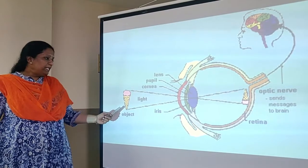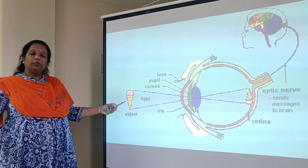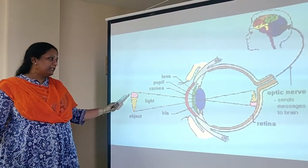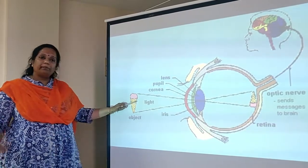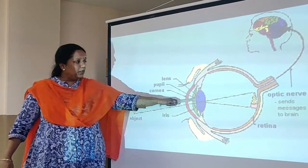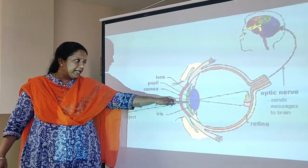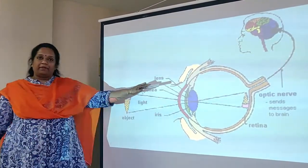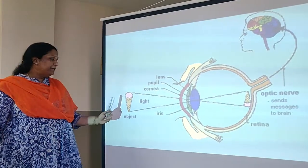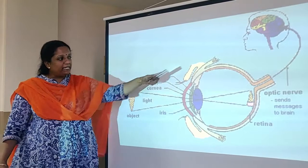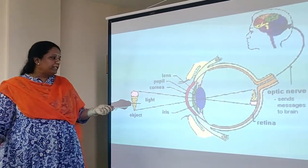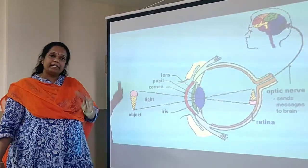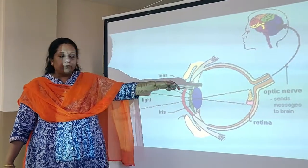In this particular diagram, we see that when we look at an object, the light rays that come from the object we are viewing fall on the convex lens which is inside our eye, and the image of the object is formed on the retina. The image formed on the retina is inverted — it is a real and inverted image.